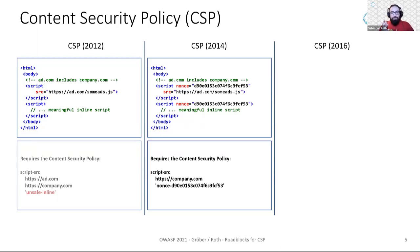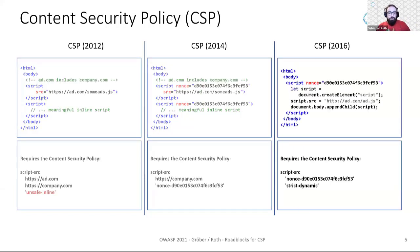However, add.com still adds company.com programmatically, so we still need to allow that domain in addition to the nonce in our CSP allow list. In 2016, they then added support for the 'strict-dynamic' source expression. This expression basically automatically propagates trust to scripts that are added programmatically, if they were added from already trusted sources.